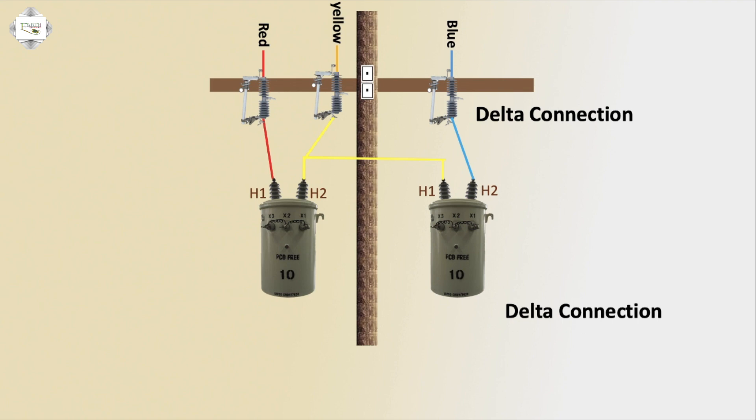High voltage side with delta connection is complete. Low voltage side means secondary coil connection. Third phase is one connection, outgoing phase red, first phase. Second phase yellow, or yellow two.